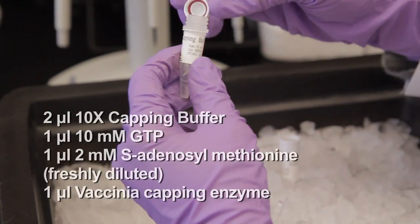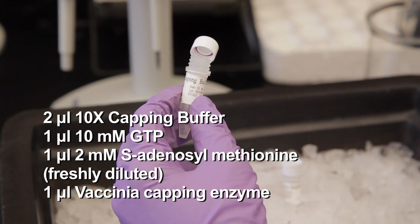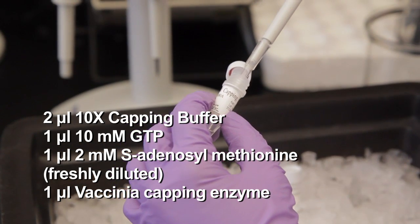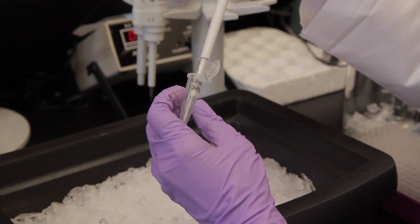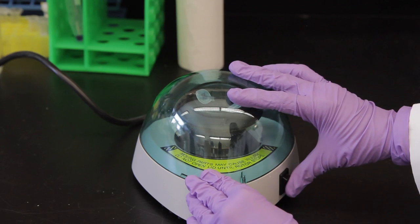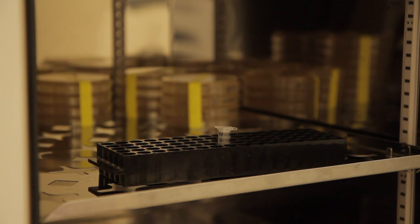To set up the capping reaction, add capping buffer, GTP, freshly diluted S-adenosylmethionine, and vaccinia capping enzyme to the denatured RNA. Gently vortex the reaction components, pulse spin, and incubate the reaction at 37 degrees Celsius for 30 minutes in a dry air incubator.